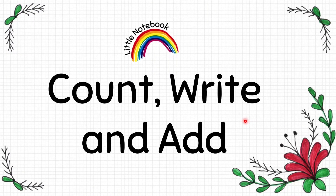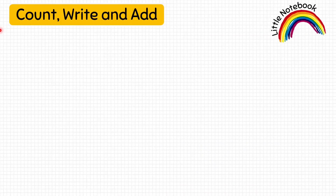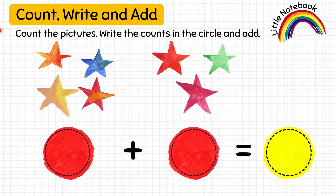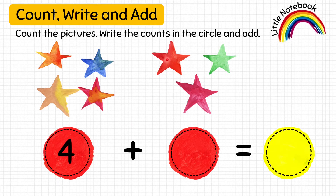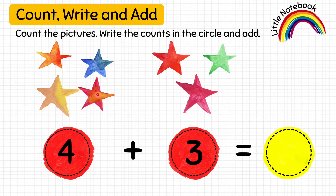Our third worksheet is Count, Write, and Add. Kids, you have to count the pictures, but this time write the count in the circle and then add that count. Let's count these stars: one, two, three, four — write four in the red circle. Now count these stars: one, two, three — write three in the red circle. Now count all these stars to add: one, two, three, four, five, six, seven — write seven in the yellow circle. So four plus three equals seven.